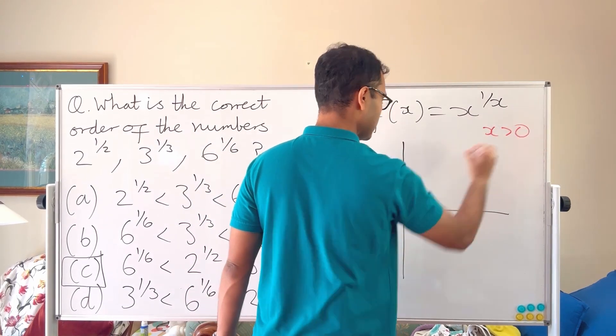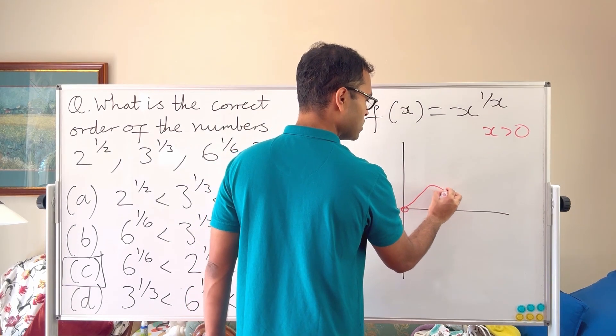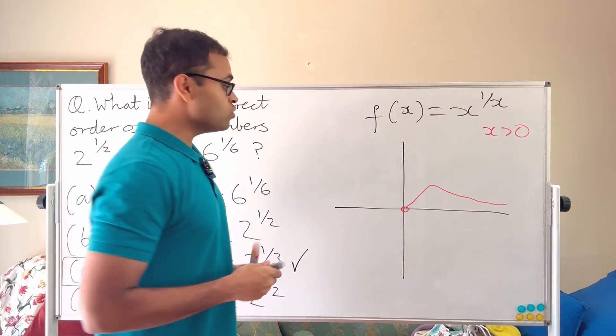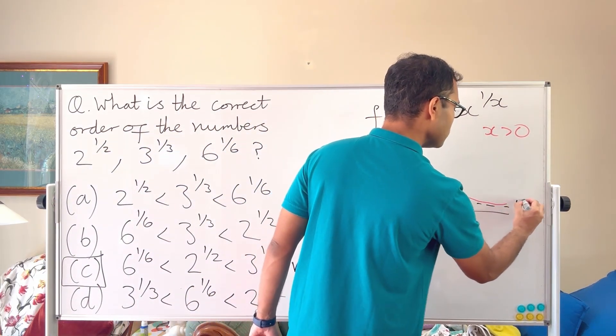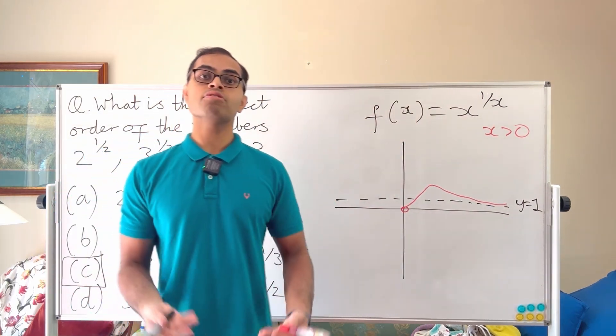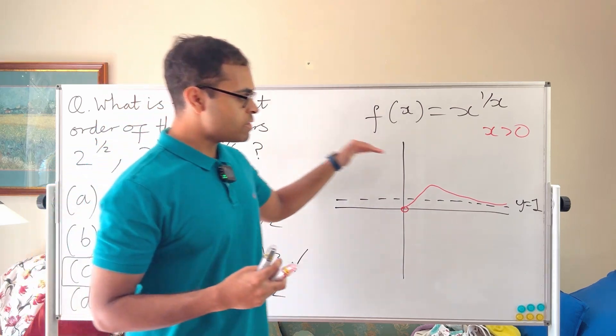It's undefined at zero, it's defined for x greater than zero. It kind of goes up, it hits a peak, and then it goes down and it stabilizes and it gets closer and closer to one as x gets larger and larger. So this is the line y equals one - it's a value of the function. And what happens is that if you take the thousandth root of thousand, the millionth root of million, etc., you're going to get numbers that are closer and closer to one as you're taking larger and larger inputs.